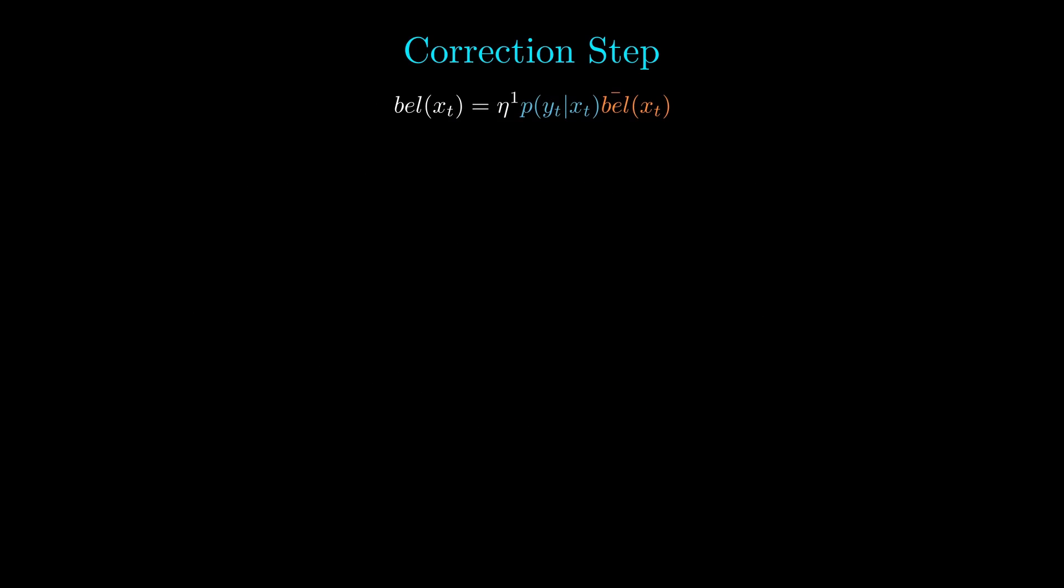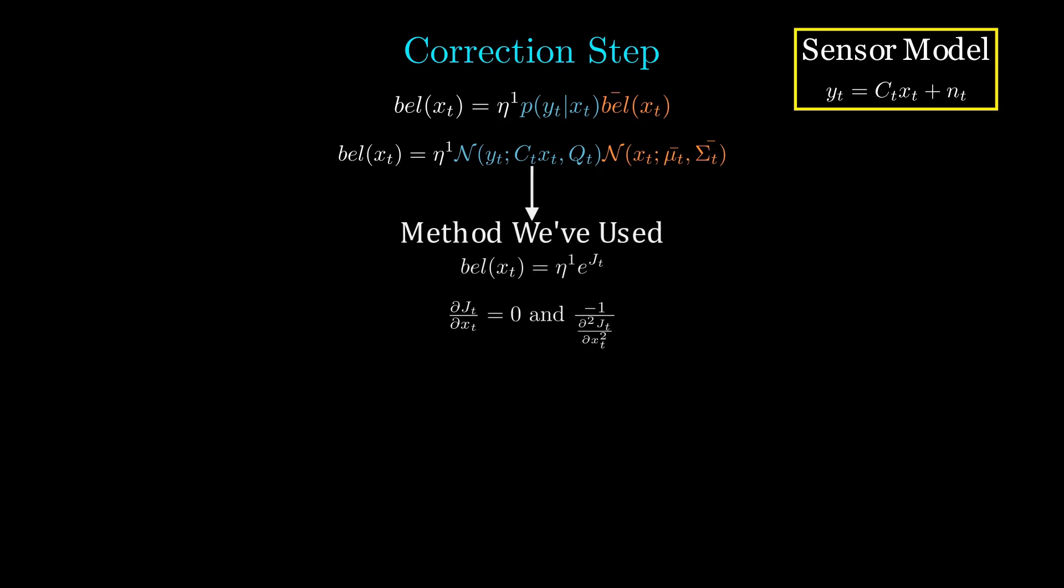Now looking at the correction step, we need to combine the product of these two distributions. Similar to the motion model, we have P of Yt given Xt, which is simply a shifted Gaussian of the noise Nt with a new mean of Ct times Xt. Then, we simply use our trusty process we've been doing to arrive at the final covariance and mean on the screen.